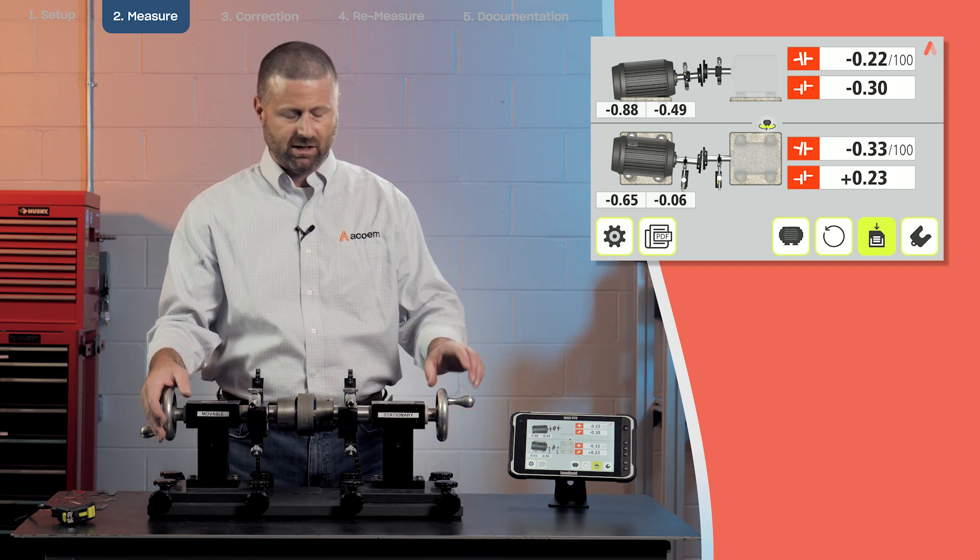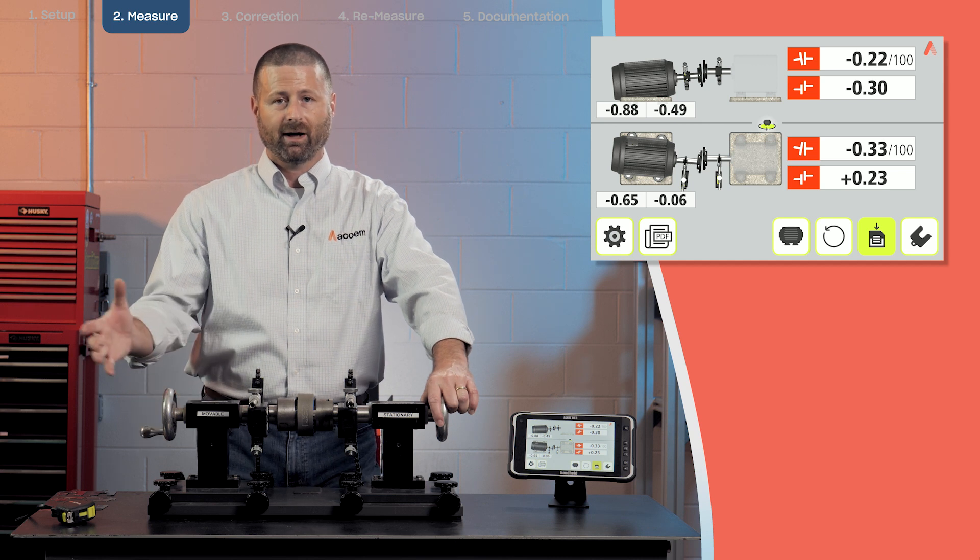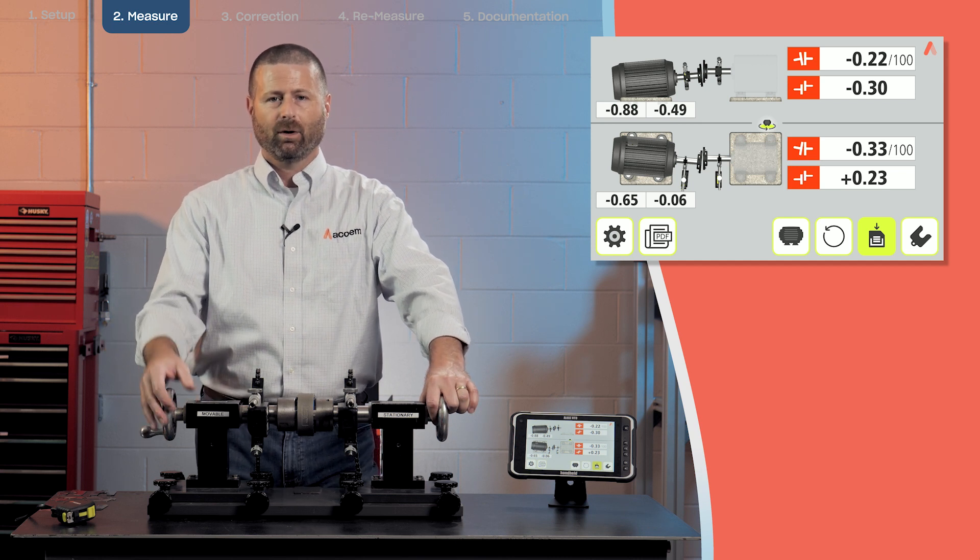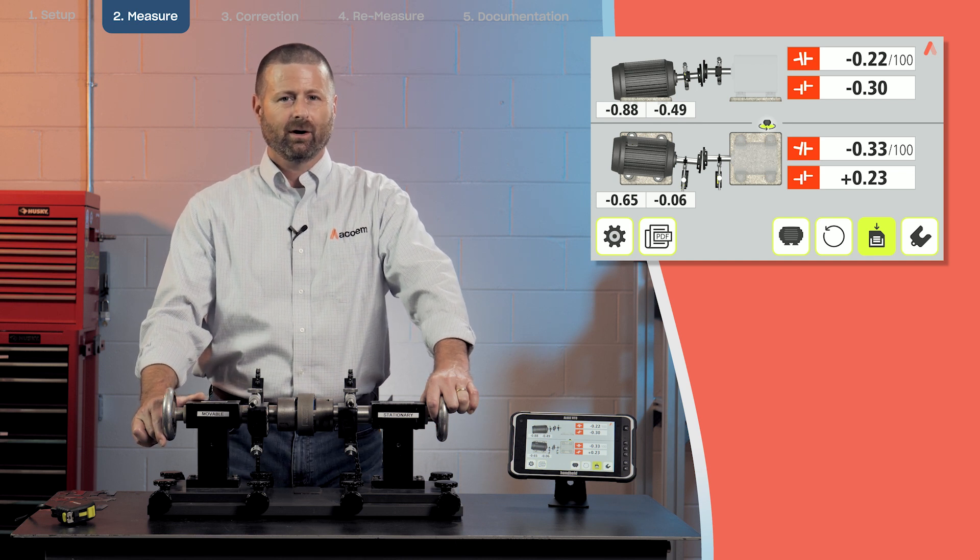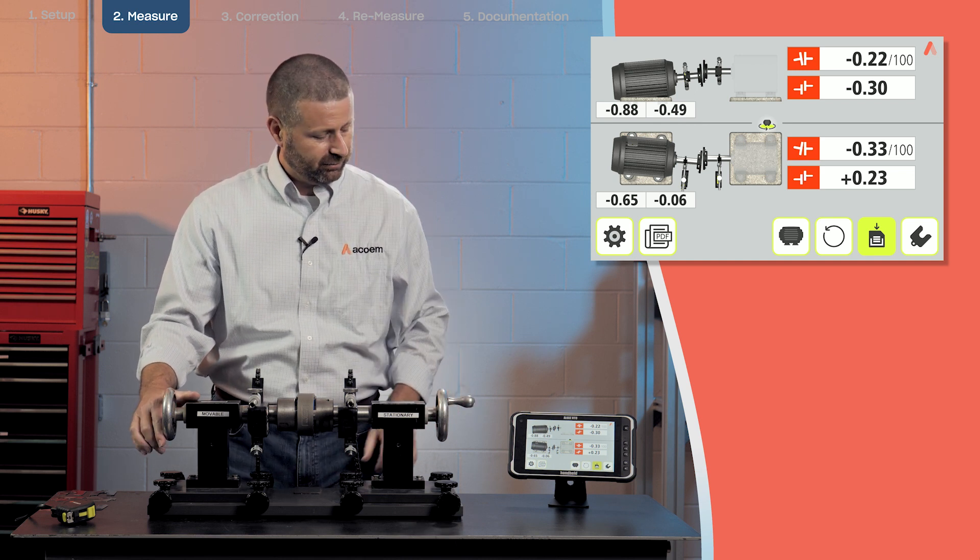The adjustments you see here are some positive, some negative. Once we get to the next step, we'll make sense of where this machine needs to go in the vertical and the horizontal.